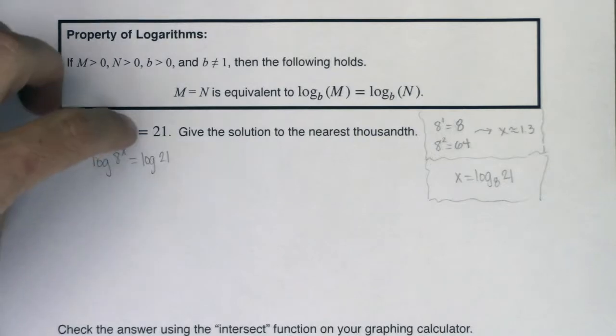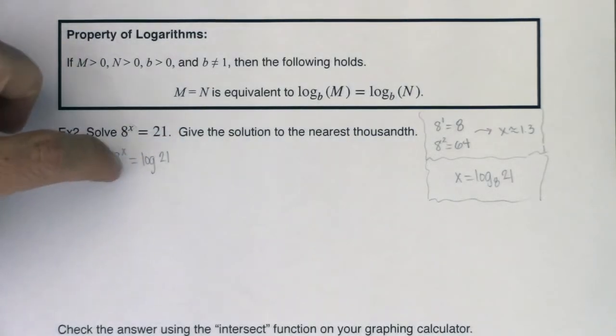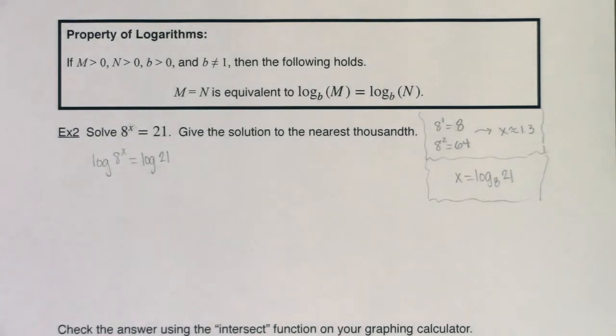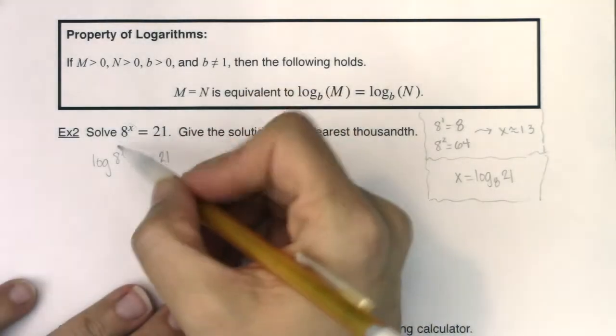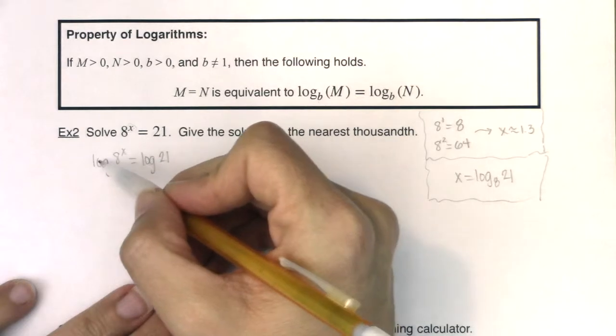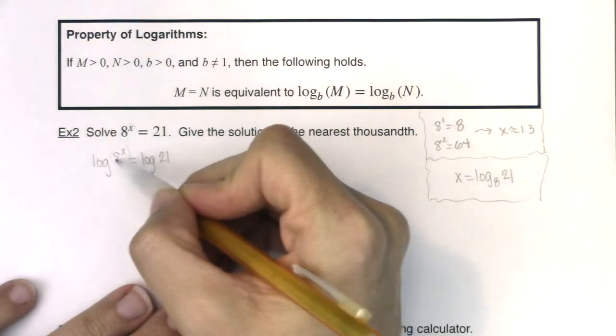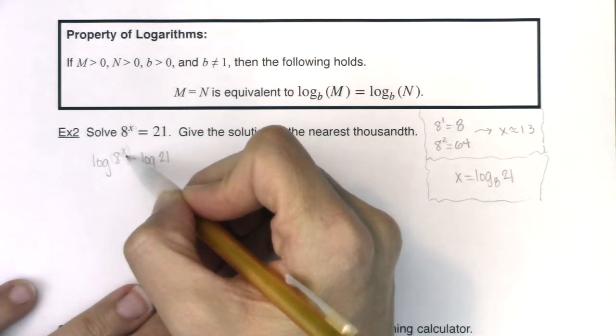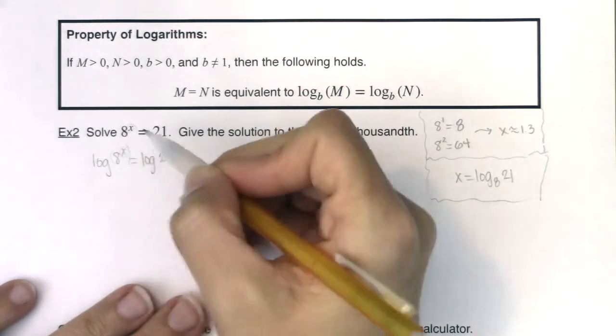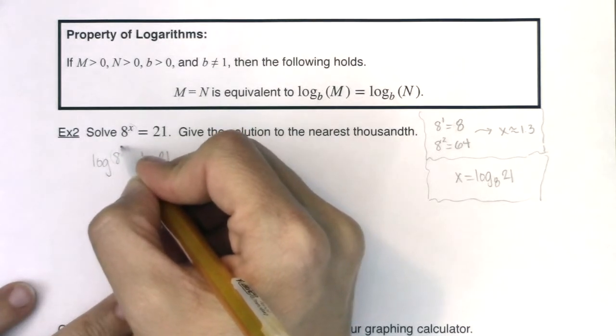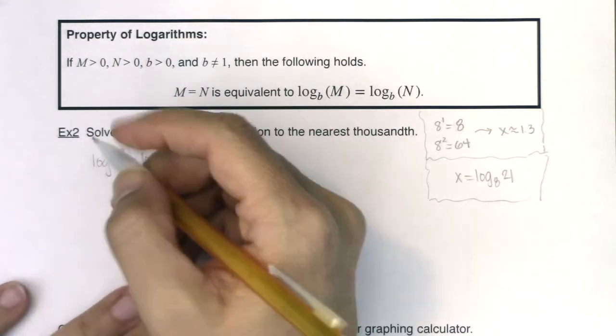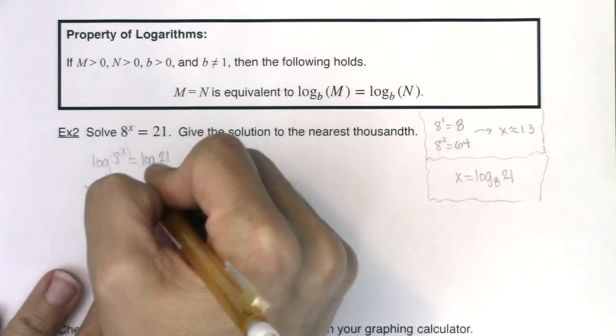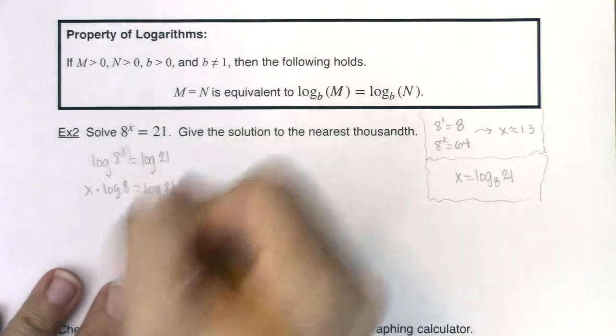So if two things are equal, I can take the logarithm of both sides of this equation. So 8^x was equal to 21. So log of the left side of the equation has to equal log of the right side of the equation. Okay, great. Now think back to 6.5. We talked about this. When you have the logarithm of a power here, 8^x, what are you allowed to do with the exponent? There was the power property in the last section, which said you can bring this exponent down in front of the logarithm as multiplication.